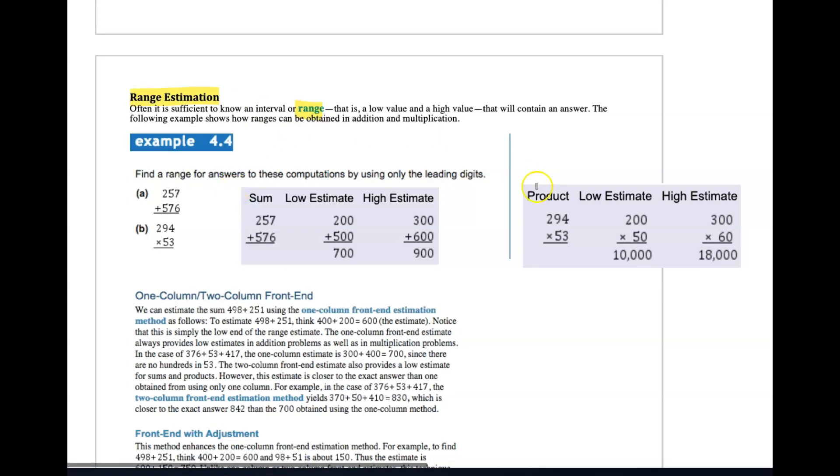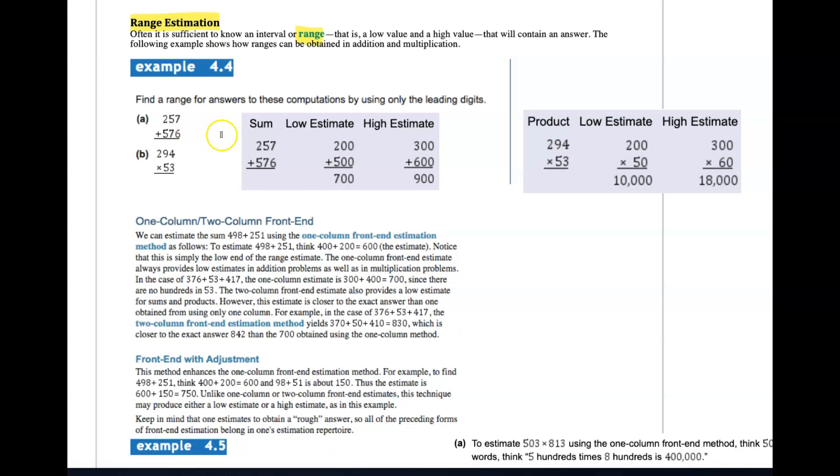Range estimation is where you give a low value and a high value. Here's an example done for you in terms of finding a low estimate and a high estimate, using leading digits, not worrying about the tens and ones place. You get a low estimate and a high estimate - it's a range, or another word we use is interval estimate.